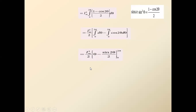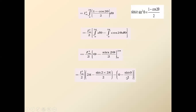Applying the limits from 0 to 2π: substituting θ = 2π gives 2π for the first term, and sin(2·2π)/2 = sin(4π)/2 = 0 for the second term. Substituting θ = 0 gives 0 for the first term and sin(0)/2 = 0 for the second. Since sin(nπ) = 0, the entire cosine integral term becomes 0. So the area of the square wave over one full cycle is Im²/2 × 2π = Im²·π.